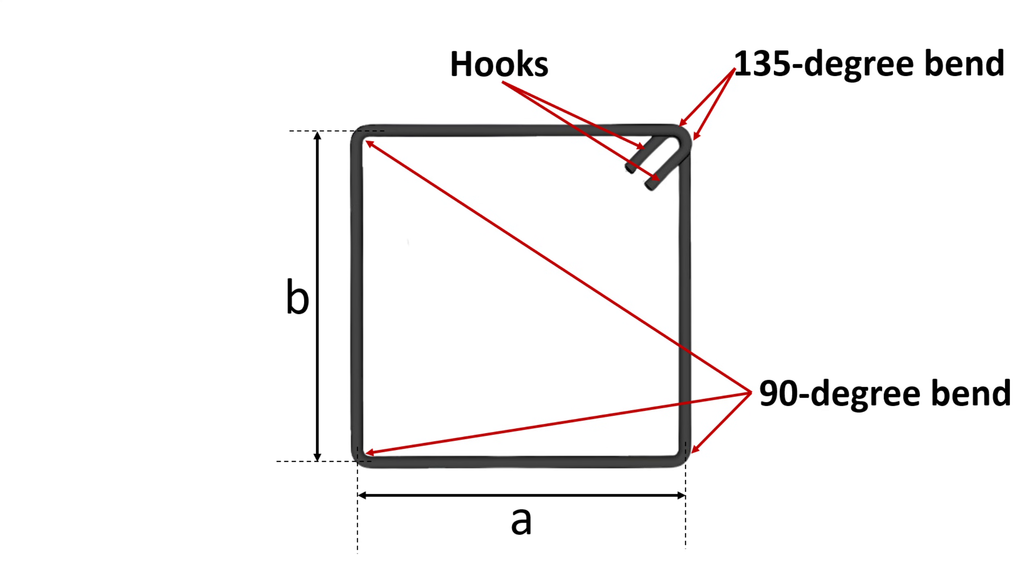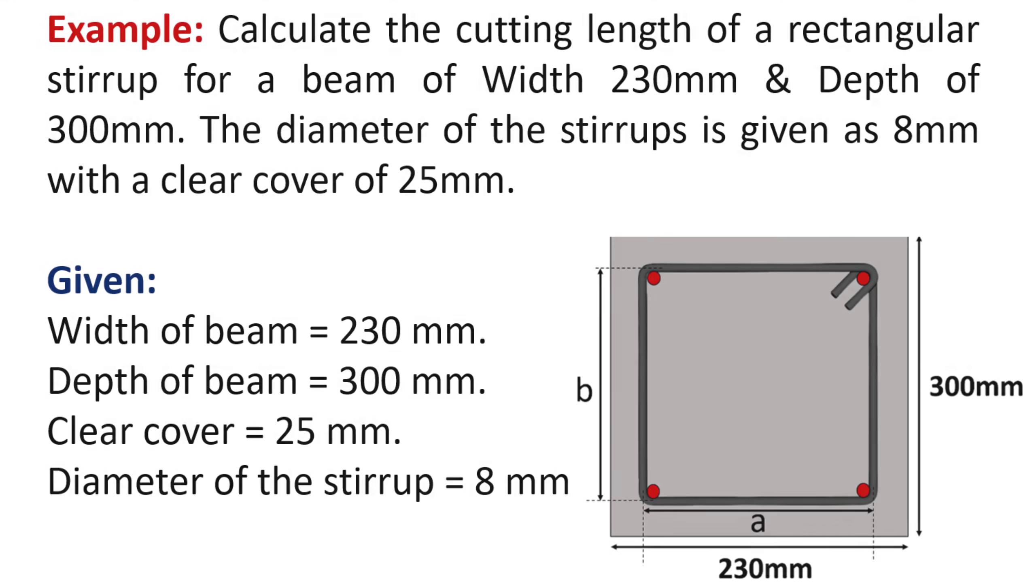As you can clearly visualize from the picture, a rectangular stirrup is bent at three of its corners by an angle of 90 degrees, and has two 135-degree bends along with two hooks given at the fourth corner.